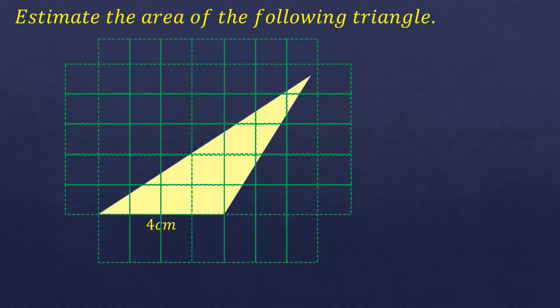Now that we have formed the grid, we're going to count how many blocks are fully shaded as part of the triangle. There are 3 fully shaded squares. The rest are not fully shaded.